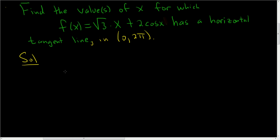It's the slope of the tangent line. So our function is going to have a horizontal tangent line when the derivative is 0 because horizontal lines have a slope of 0. So all we do is take the derivative and set it equal to 0.